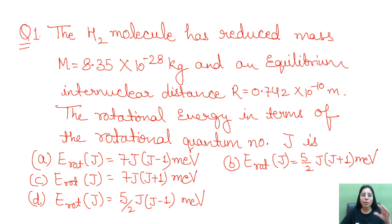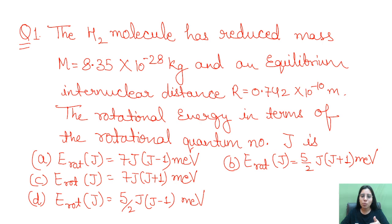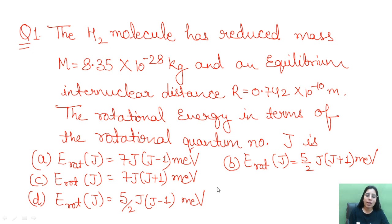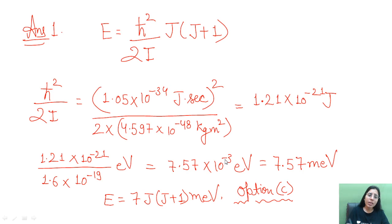The first question: the H₂ molecule has reduced mass μ and equilibrium internuclear distance r. The rotational energy in terms of the rotational quantum number J is given by the options provided. To solve this, you need to recall the formula for rotational energy: E_rotational = ℏ²/2I × J(J+1), where I is the moment of inertia.